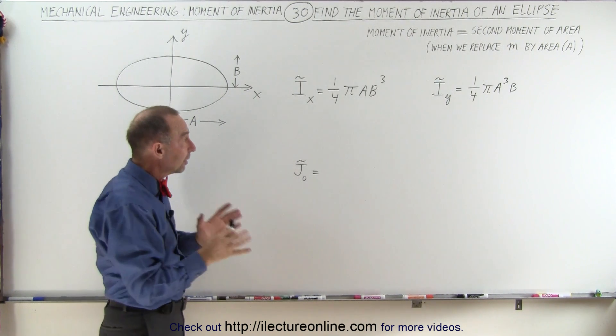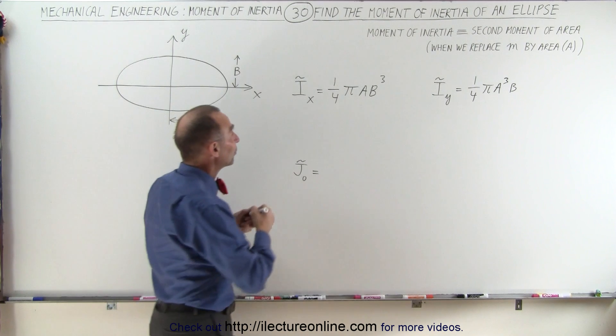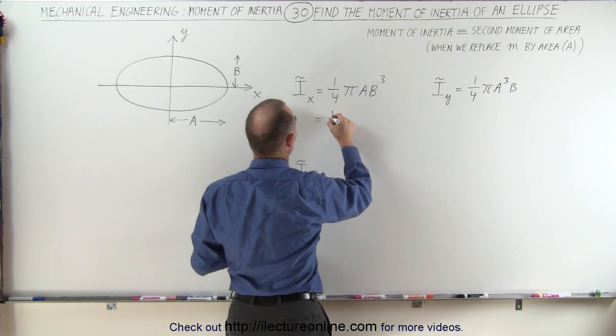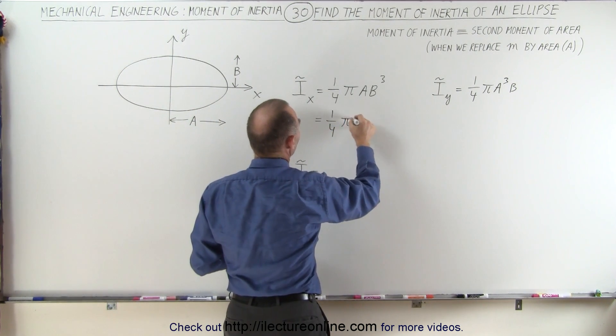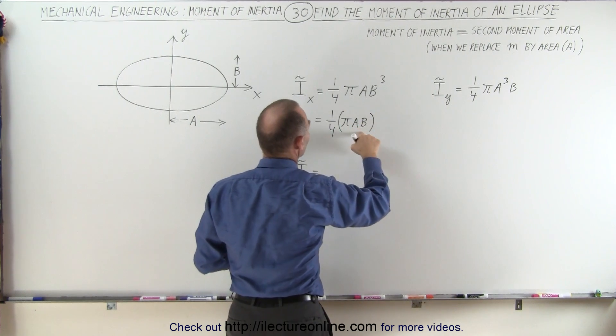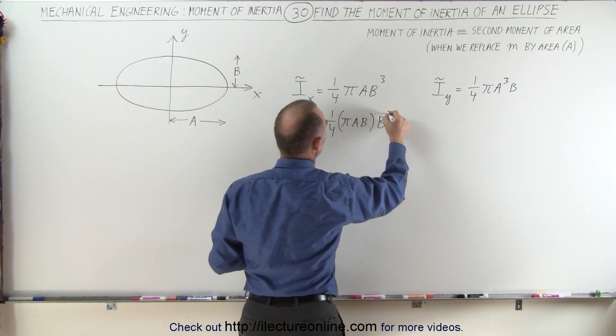Now, the area of an ellipse is pi a times b, so this can then be written as one-quarter pi a times b, which is the area of the ellipse, times b squared.